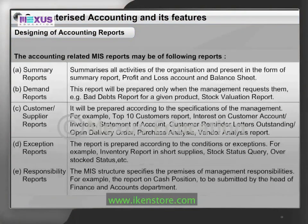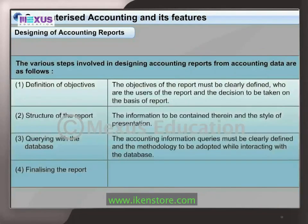The accounting-related MIS reports may be of the following types: a) summary reports, b) demand reports, c) customer or supplier reports, d) exception reports, and e) responsibility reports. The various steps involved in designing accounting reports from accounting data are: 1) definition of objectives, 2) structure of the report, 3) querying the database, and 4) finalizing the report.